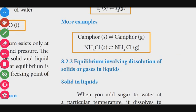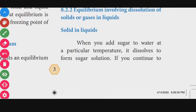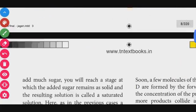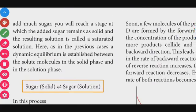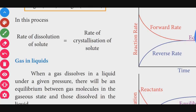Equilibrium also involves the dissolution of solids or gases in liquids. For example, when sugar is added to water at a particular temperature, it dissolves. If you continue to add more sugar, you will reach a stage at which the added sugar remains solid — that is a saturated solution. In a saturated solution, the rate of dissolution is equal to the rate of crystallization of the solid.